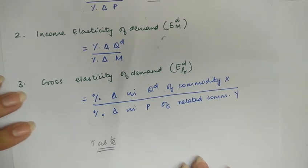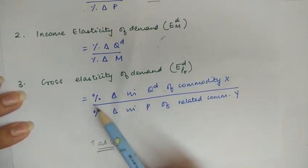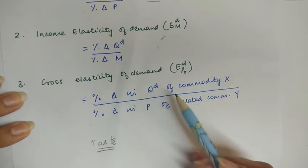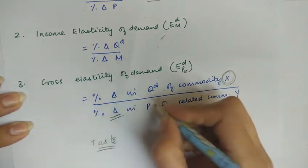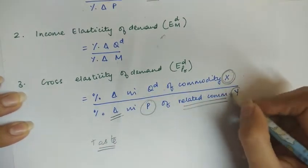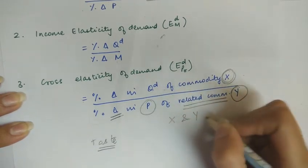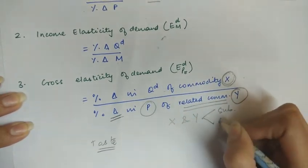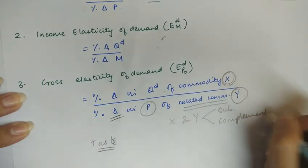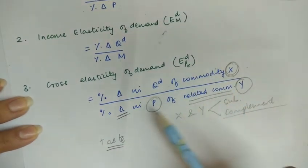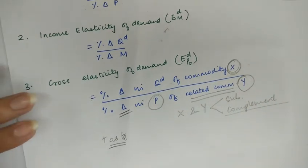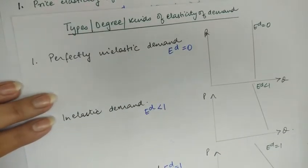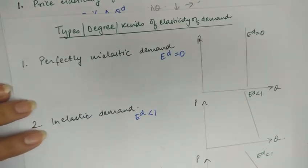Now let's move on to cross elasticity of demand. This is the percentage change in quantity demanded of commodity X due to a percentage change in the price of a related commodity Y. X and Y can be substitute goods or complement goods — they are simply related to each other. It tells you how the change in price of one commodity impacts the quantity demanded of the related good.